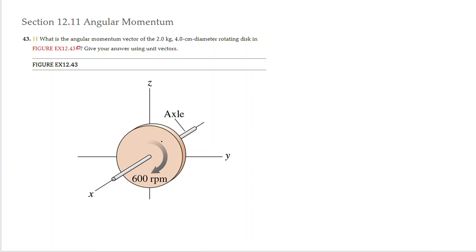The first thing we are going to do is express the angular momentum as a function of the angular velocity and the moment of inertia. So the angular momentum, which is a vector, will be equal to the moment of inertia times the angular velocity. The direction of the angular momentum and the direction of the angular velocity is going to be basically the same in this case.